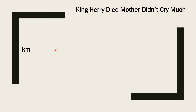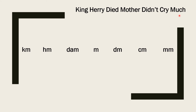Harry — H represents hectometer. D represents decameter. Mother — M represents the basic unit, which is meter. So remember this line: 'King Harry Died, Mother Didn't Cry Much' — kilometer, hectometer, decameter, meter, decimeter, centimeter, millimeter.